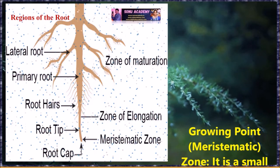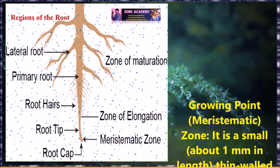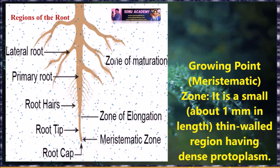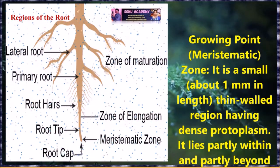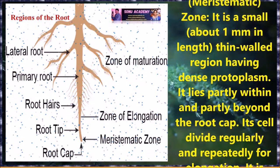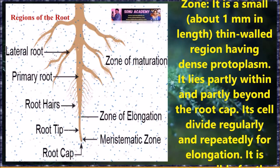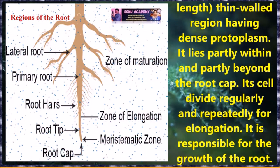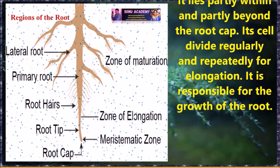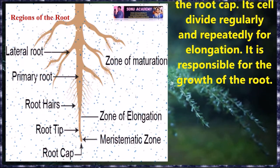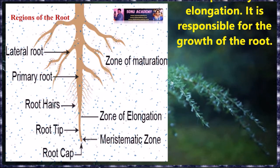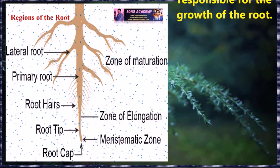The second one is the growing point, also called the meristematic zone. The growing point or meristematic zone is small — about 1 mm in length — a thin-walled region having dense protoplasm. It lies partially within and partly beyond the root cap. It divides regularly and repeatedly for elongation, and is responsible for the growth of the root.